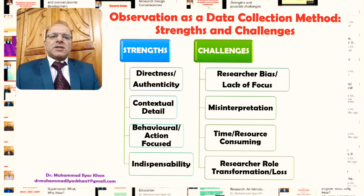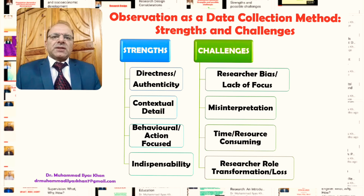Secondly, contextual detail. This is a data collection method that helps researchers in collecting data — but not just the data — also in understanding and having a first-hand experience of the context in which they are conducting their research. In most social science research studies, we need not only an understanding of the data we are collecting but also the situation or context in which we are collecting it. That helps later in the interpretation and critical analysis of the data.